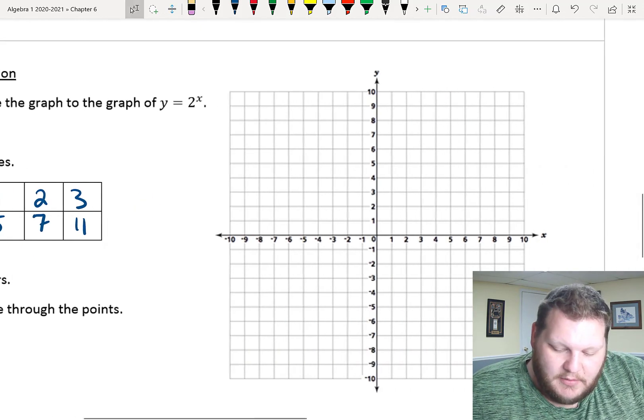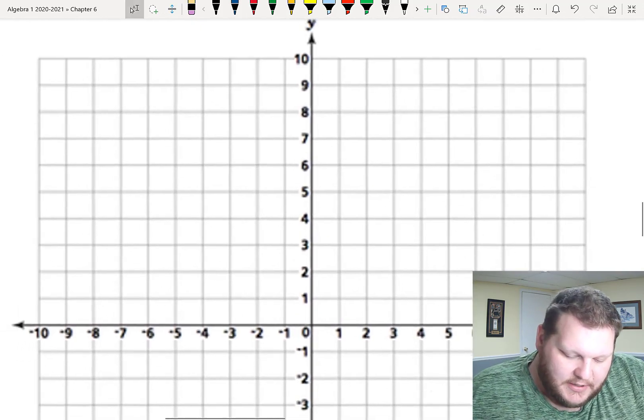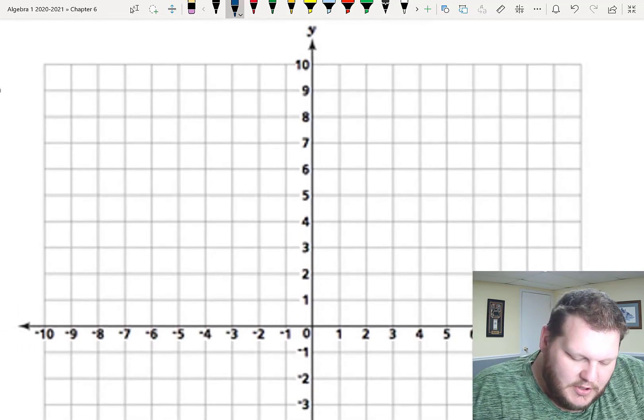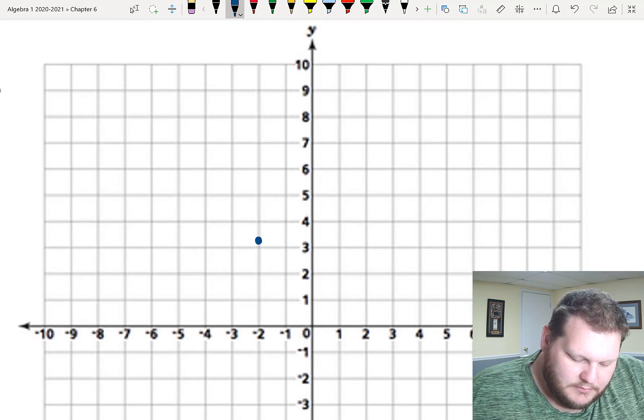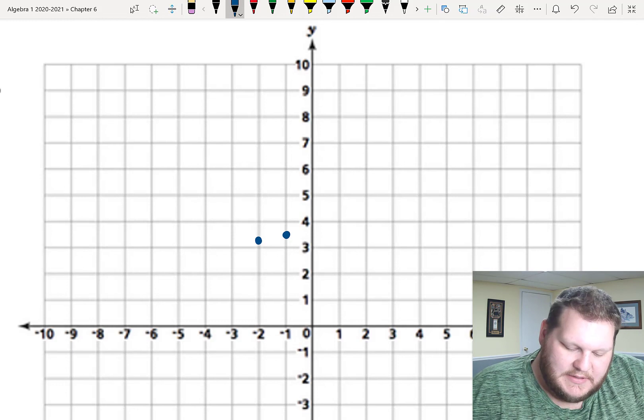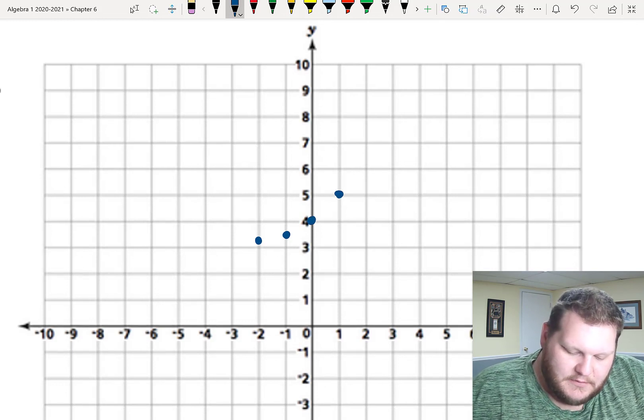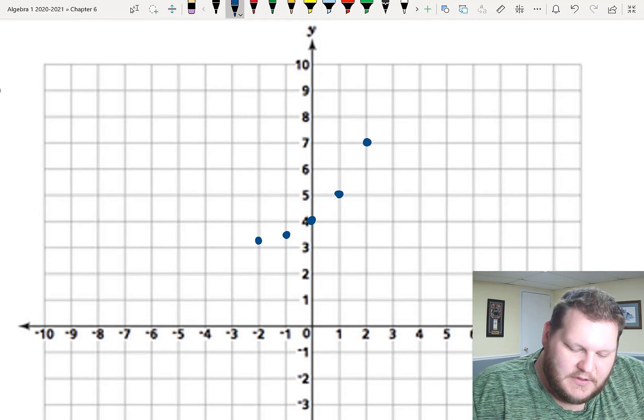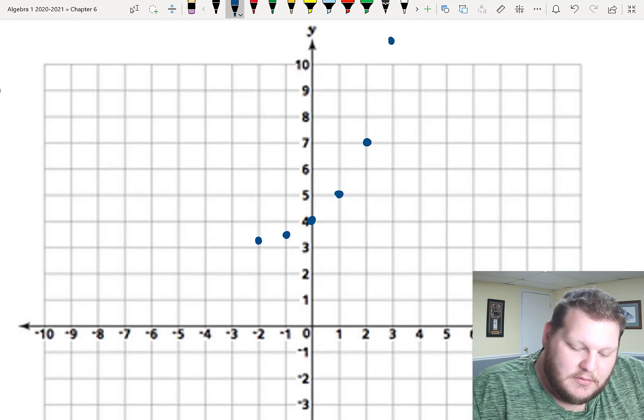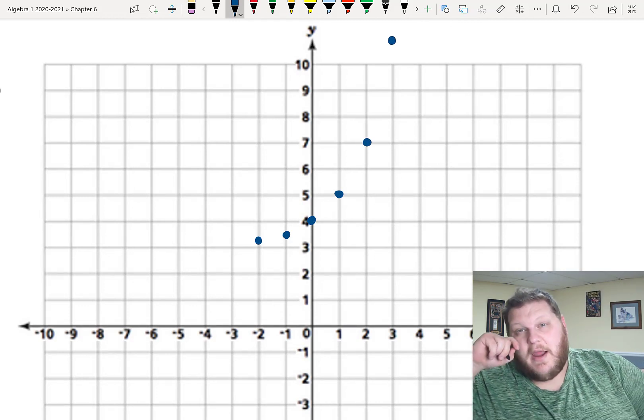So, I'm still going to go ahead and start by plotting our points. So, on our graph, at negative 2, we were up at 3 and a quarter. At negative 1, we were at 3 and a half. 0, we were at 4. 1 was at 5. 2, 7. And then, 3 was 11. So, it's going to be just barely off my graph a little bit.